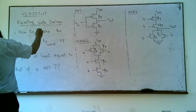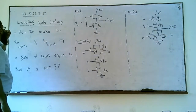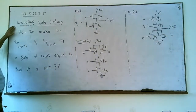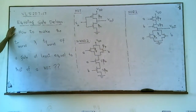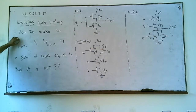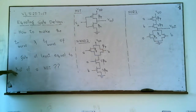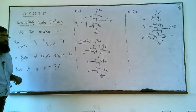Welcome to the 17th lecture from chapter number 7. We are studying VLSI design and in this lecture we will study how to equate gate delays of a certain gate — the worst case rise time delay and the worst case fall time delay — to be equal to those of a NOT gate (naught).